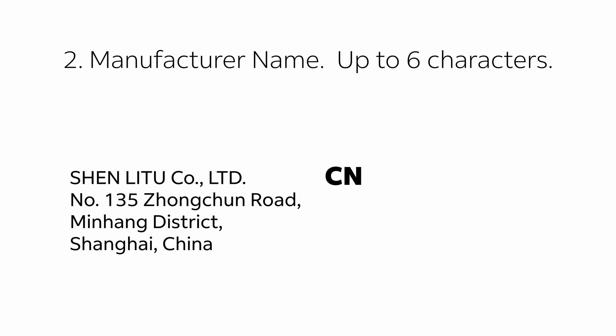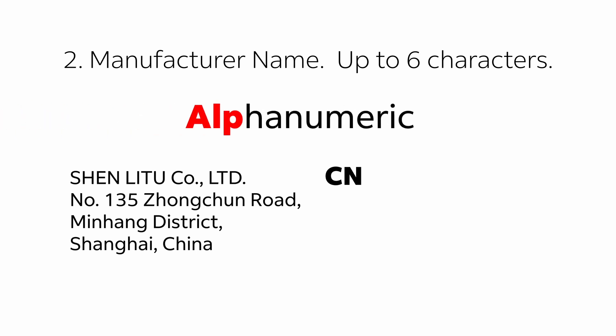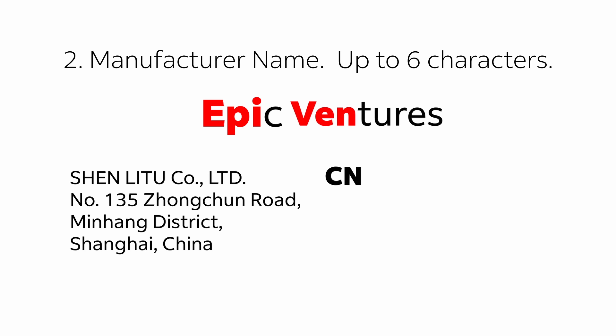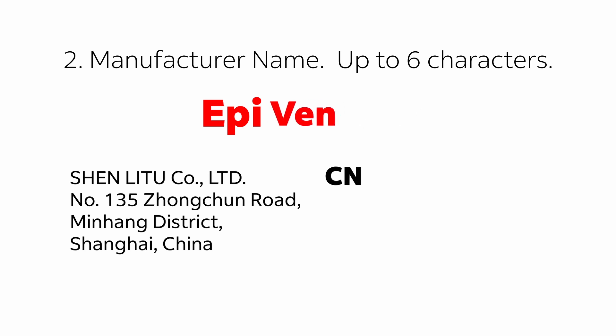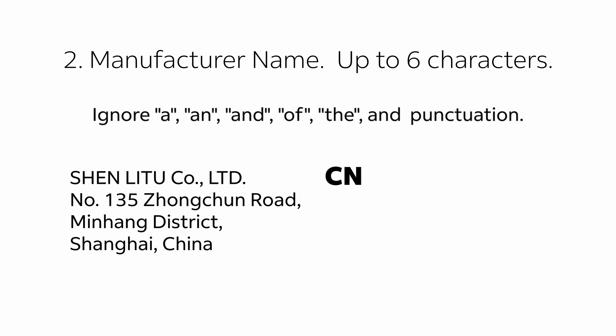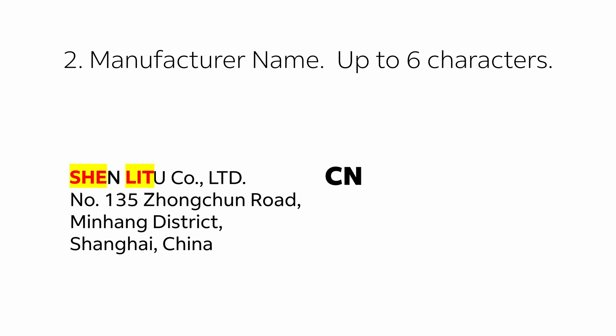Step 2: Manufacturer Name — up to six characters. For a one-word manufacturer name, take the first three characters. For a manufacturer name with two or more words, take the first three characters of the first two words. Ignore common words and punctuation. For Sheen Litu Company Limited, the result is S-H-E-L-I-T.